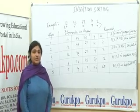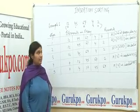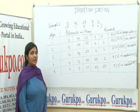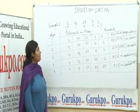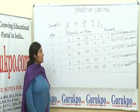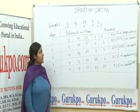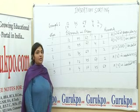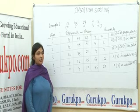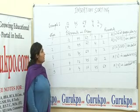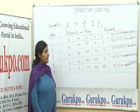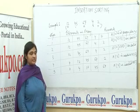Now let us understand insertion sorting with an example. Suppose we are given an array or a list of 5 elements: 12, 45, 67, 4, and 2. We are here to sort the list using the insertion sort method. In the first round, we consider A[0], that is 12, is at its proper place.